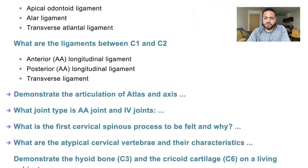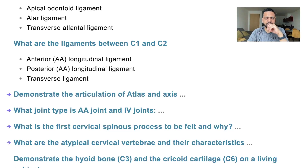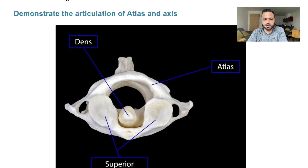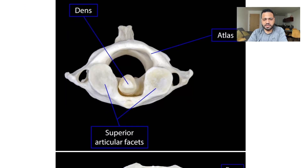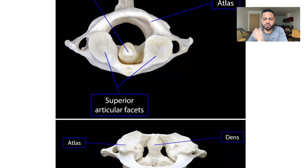We need to demonstrate articulation of the atlas and axis. We hold the atlas, find the facet for the odontoid peg, make this anterior, and get the facet articulating into it. As we can see, this is the atlas posterior arch from the anterior surface. You have the posterior tubercle, the anterior tubercle, the facet, the dens articulating, the bifid spinous process posteriorly, and the dens pointing upward.